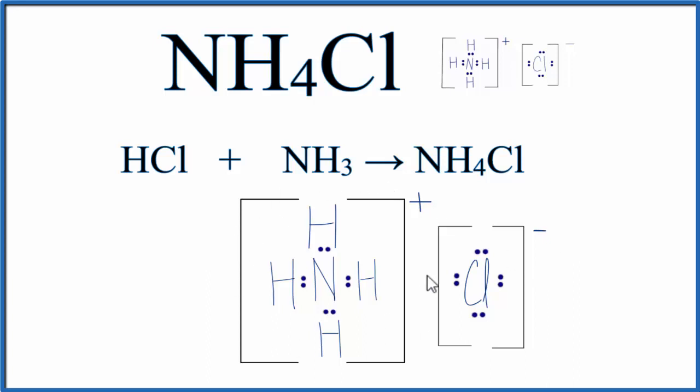It's ionic because we have this positive ion here and this negative ion attracted together. That's our ionic bond. Then we have covalent bonds. And one of these could be considered a coordinate covalent bond.